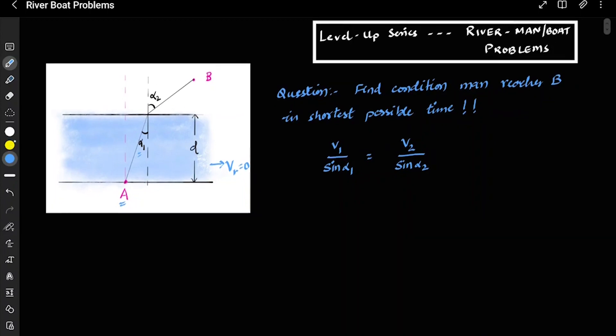So without even using pen and copy, if you remember the result, you can easily solve this question. It is v1 upon sin alpha 1 is equal to v2 upon sin alpha 2. And this is the famous Snell's law, and physics is so beautiful that laws are applicable everywhere.